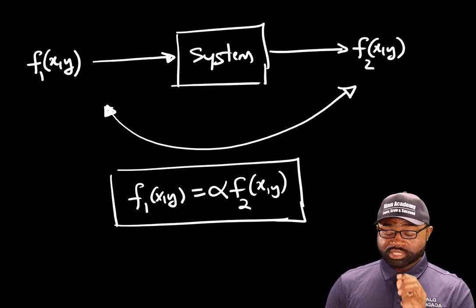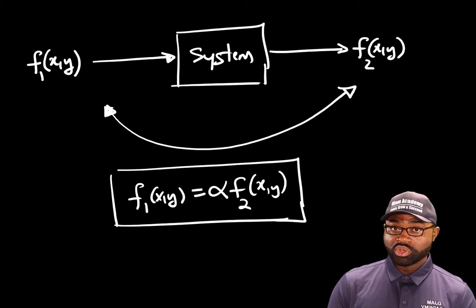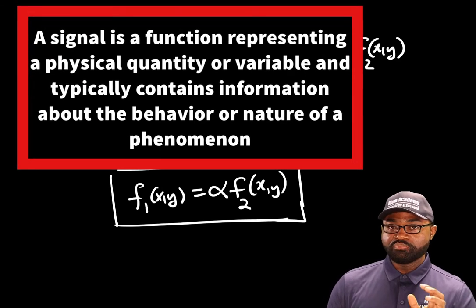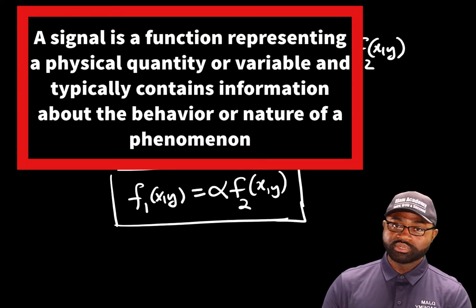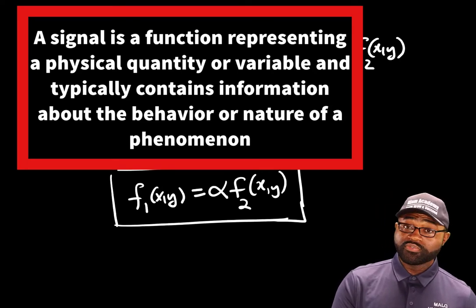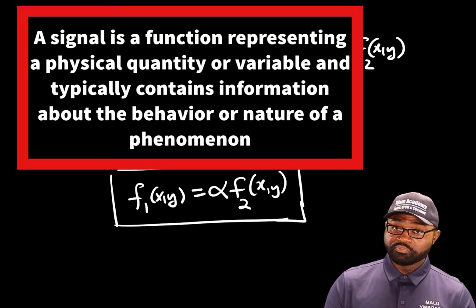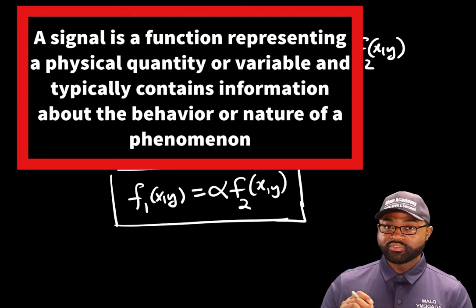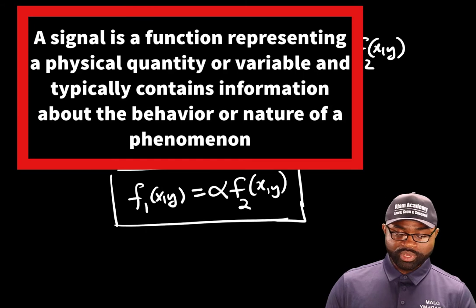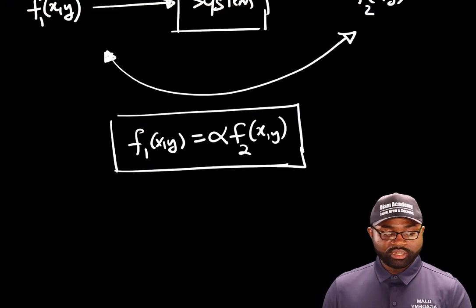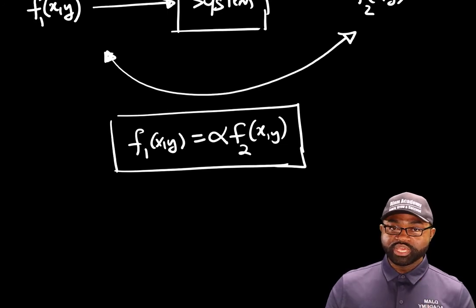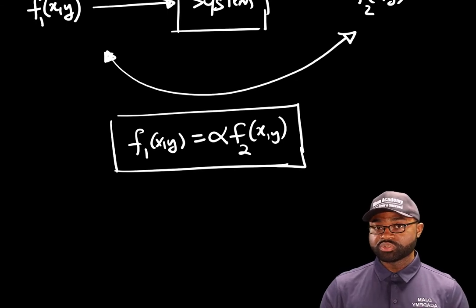What is a signal? A signal is usually represented by a function of one or two independent variables, which contains information about the behavior or the nature of a particular physical phenomenon. A signal is simply an abstraction of a physical quantity represented by a function of one or two independent variables that contains information about the behavior of a particular physical phenomenon.